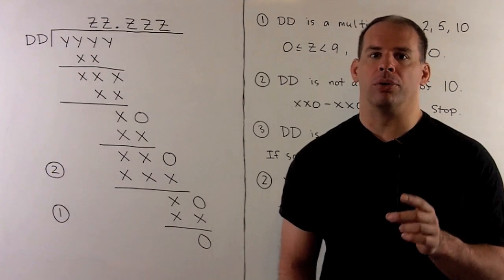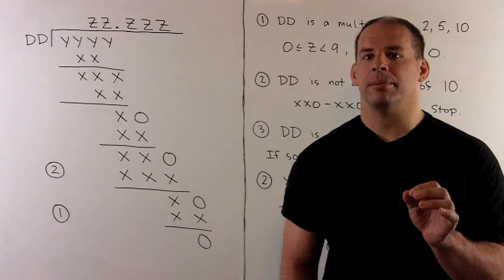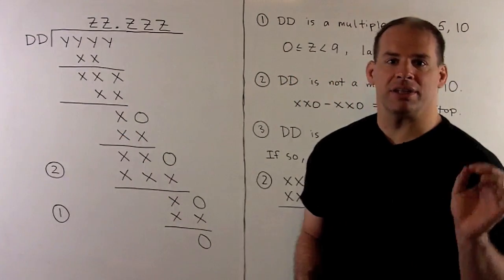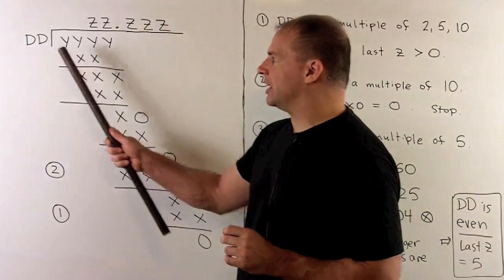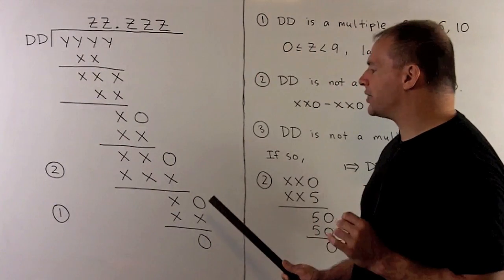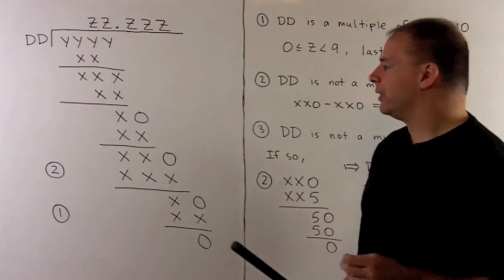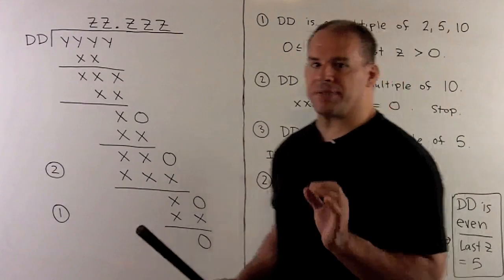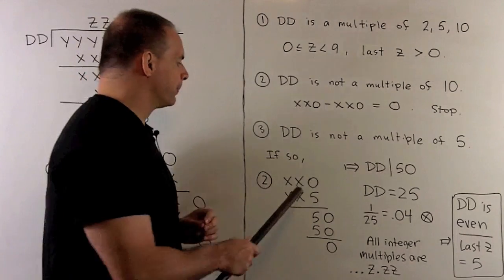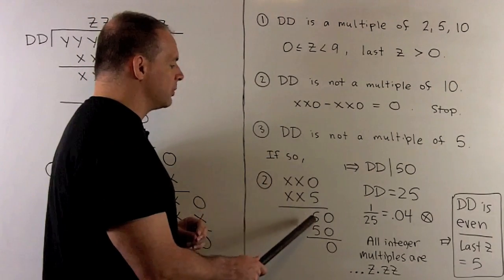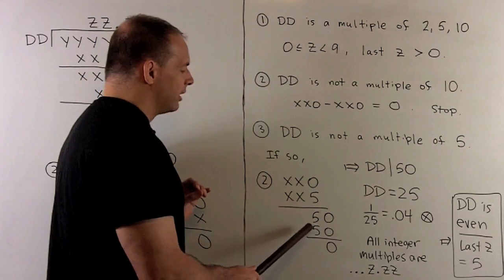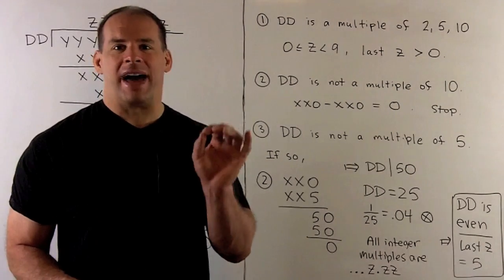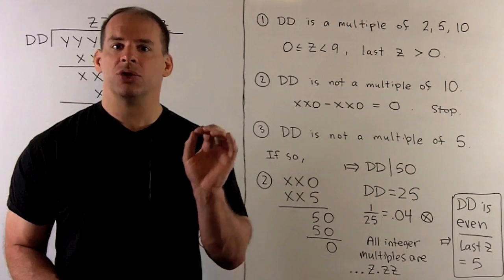So our divisor is a multiple of 2 or 5 but not both. Let's assume it's a multiple of 5 and show a contradiction. If the divisor is a multiple of 5, the second digit is 5 or 0. Multiplying by our digit Z gives an integer ending in 5 or 0. If it ends in 0, that's the last step, so it would have to end in 5. Working out that last subtraction: 0 minus 5, carry 1, gives a 5, making 50. So the divisor must divide 50, and since it has two digits, it's 10, 25, or 50.